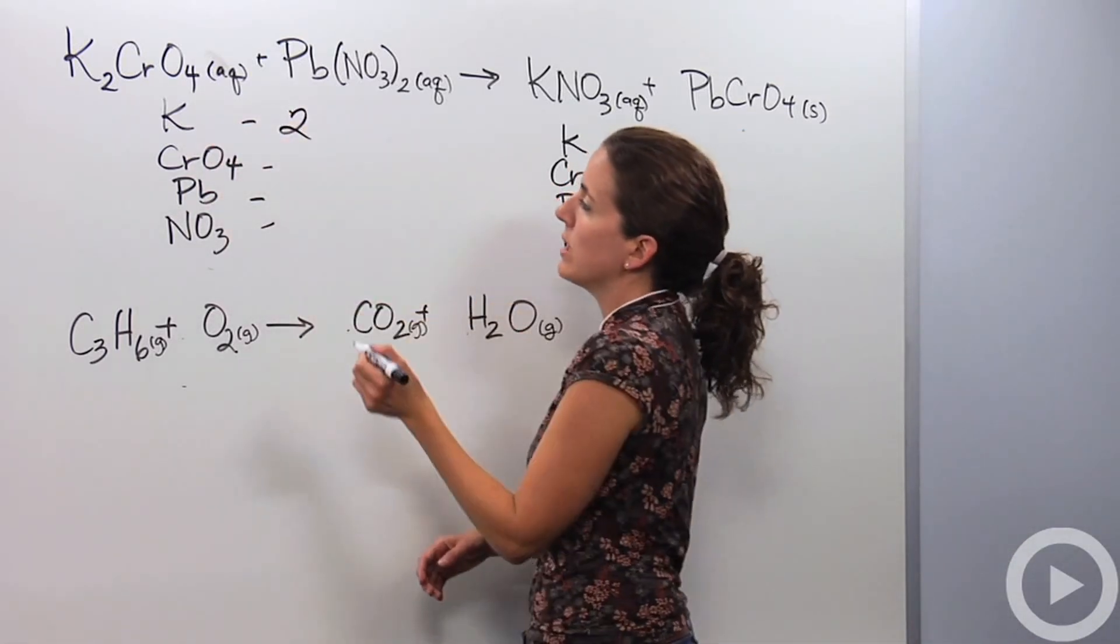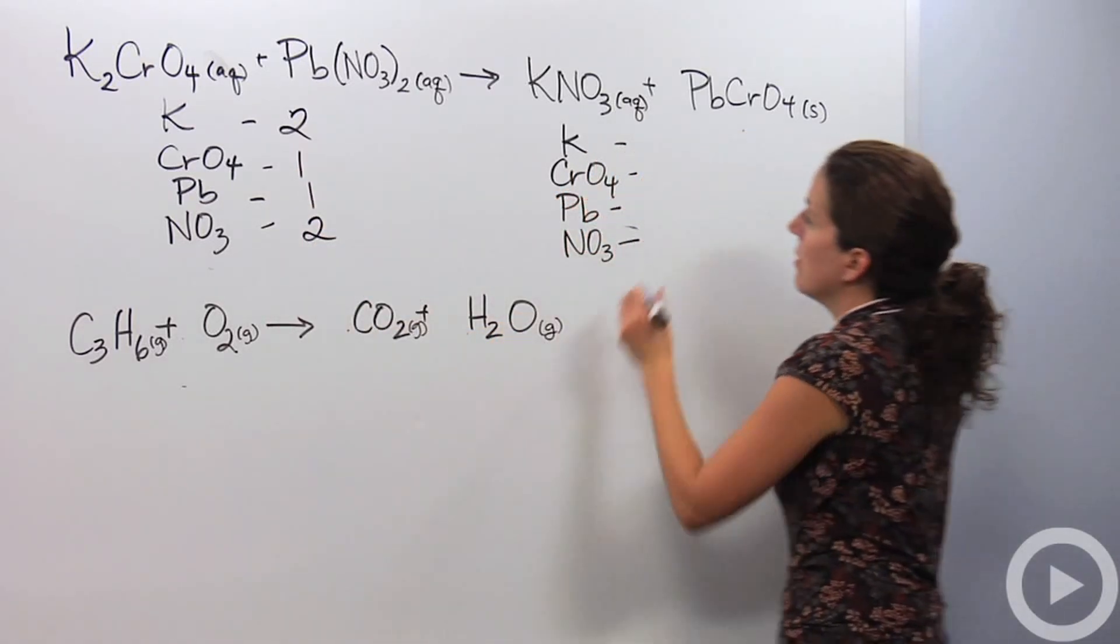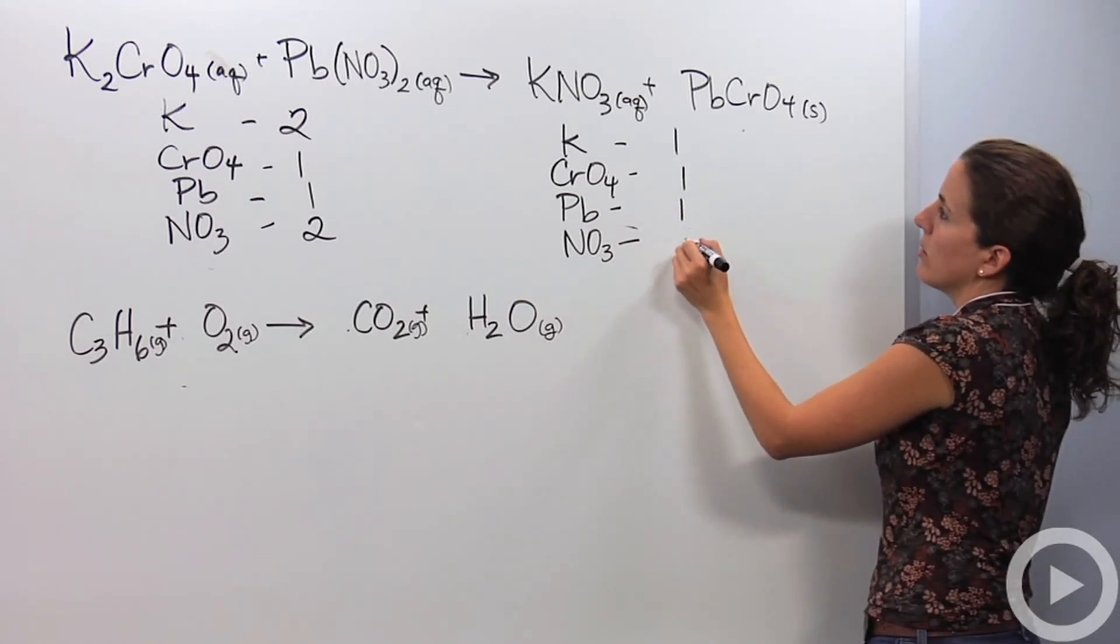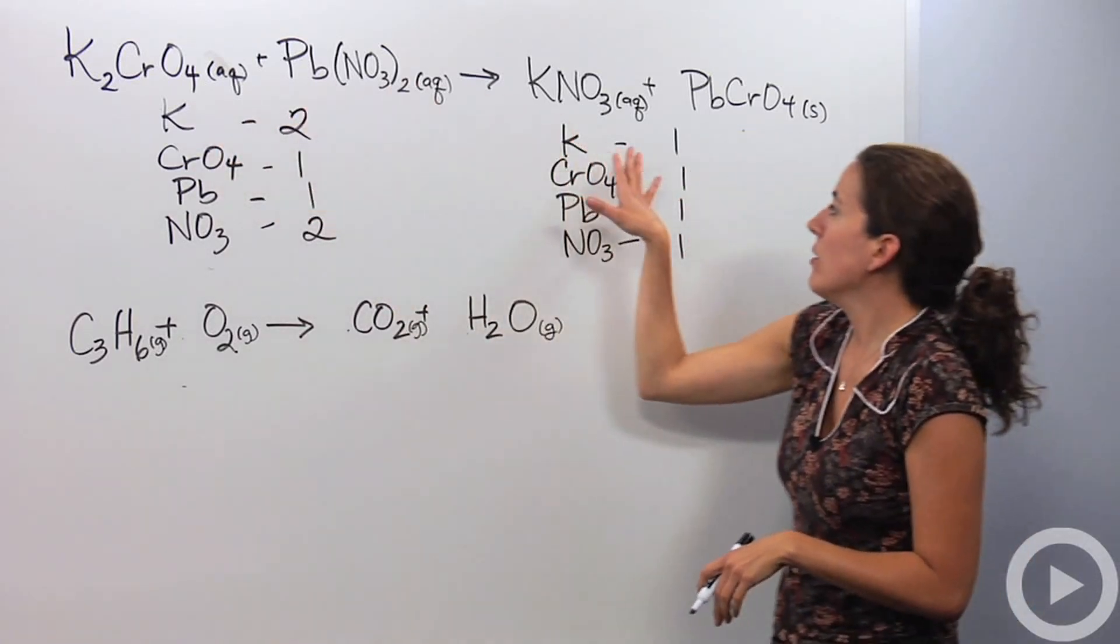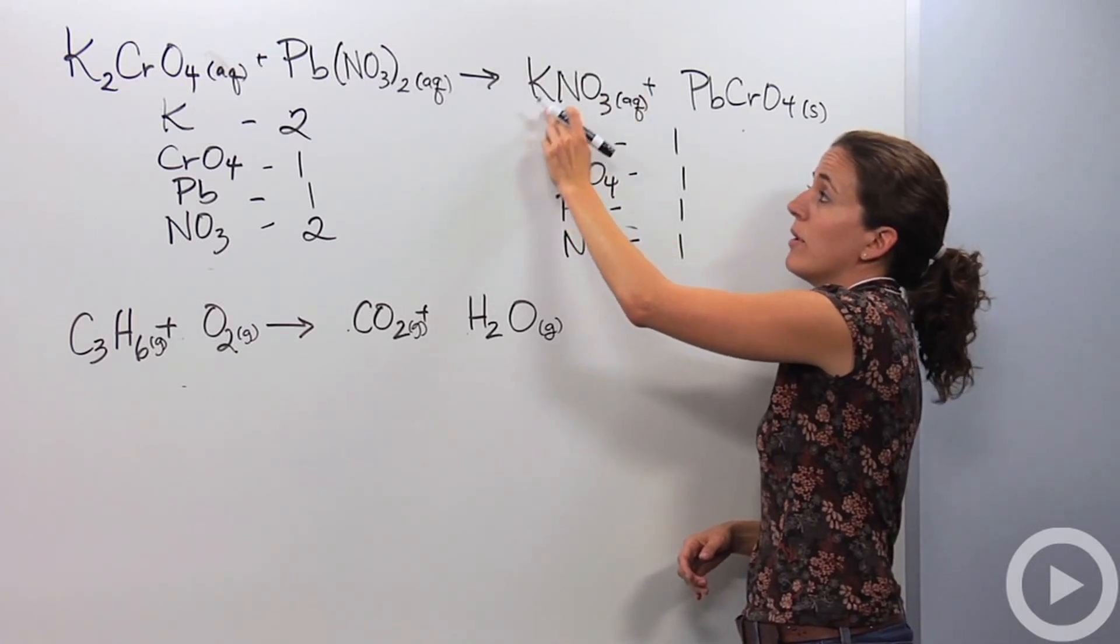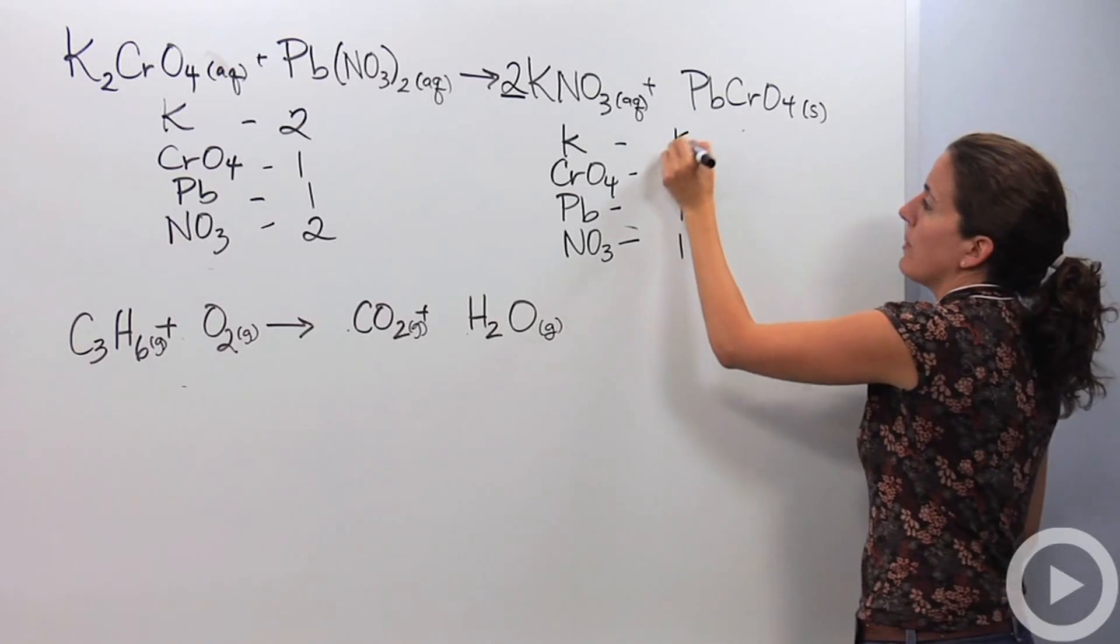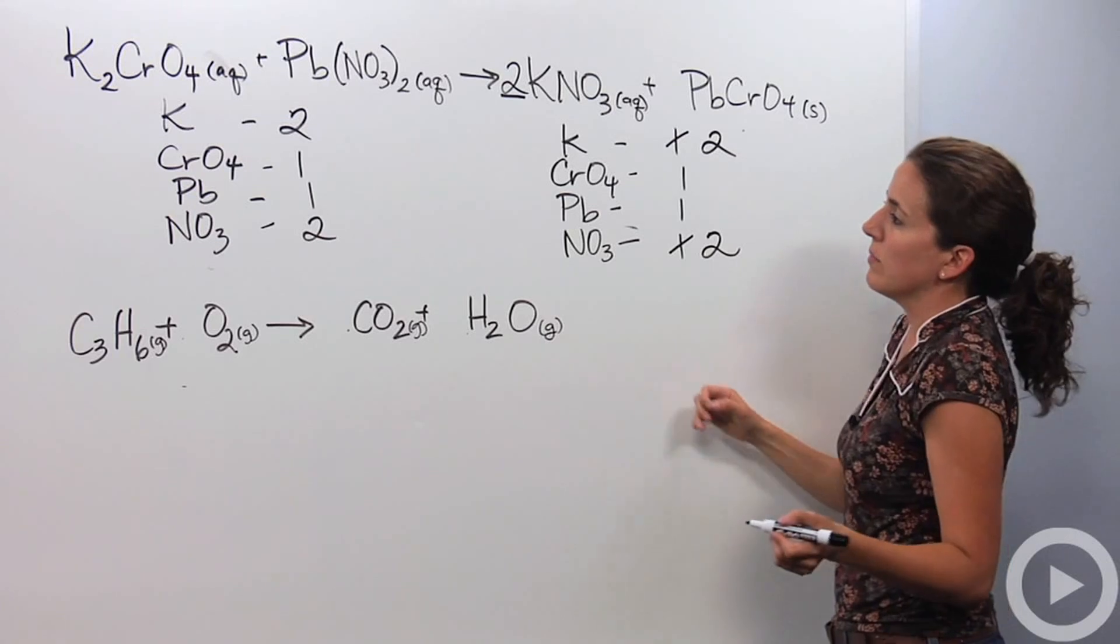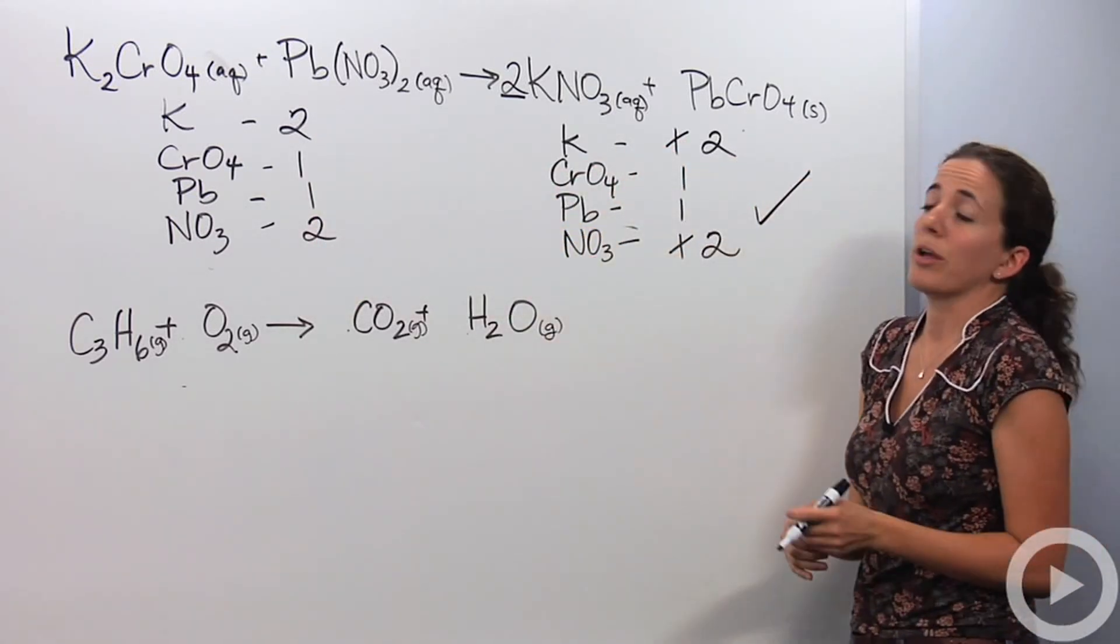So I have two potassiums, one chromate, one lead, and two nitrates. I have one potassium, one chromate, one lead, and one nitrate. So let's deal with the first one first. Potassium, we have two over here, we have one over here. I do not want to put a two within the compound itself. I do not want to change this at all. I want to put it in front. So I'm going to make that two. So now I have two potassiums over here, but that also changes my nitrates to two. And let's see, so we have two, one, one, two. Two, one, one, two. It looks like the whole thing is done. We are good to go.